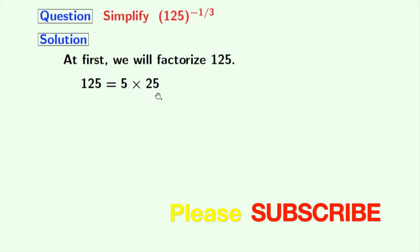We all know that 25 is equal to 5 times 5, so finally we have 125 is equal to 5 times 5 times 5. As there are three number of 5s here, 125 can be written as 5 to the power of 3.